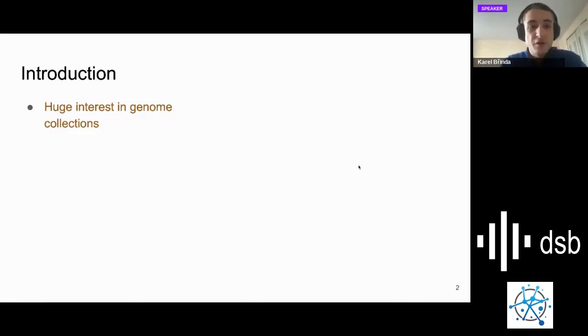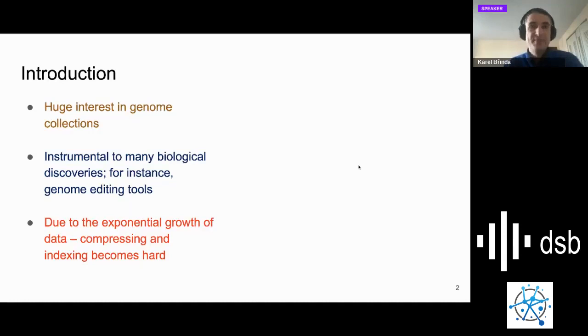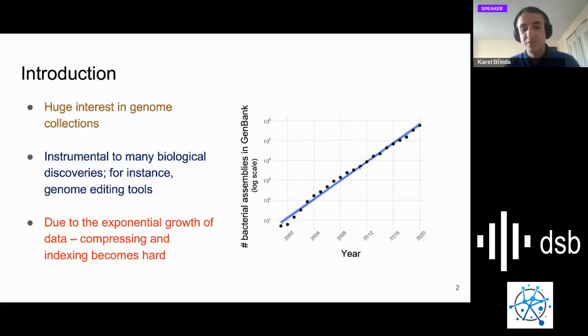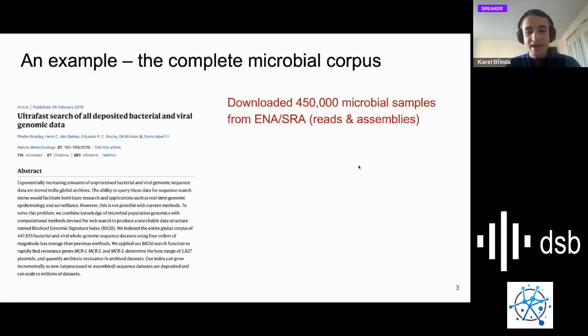In biology there is huge interest in genome collections. Genome collections have been instrumental to many biological discoveries, for instance many genome editing tools. However, due to the exponential growth of data, compressing and indexing becomes very hard. Just one motivational example: look at the number of bacterial assemblies in GenBank on a log scale. You can see it's really growing exponentially. There's a big question: how to keep up with the growing amount of data?